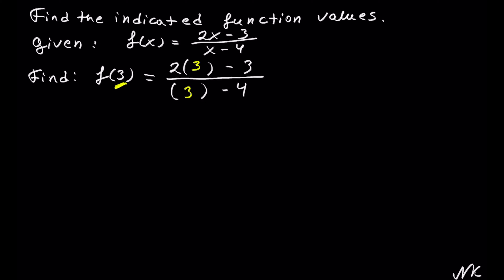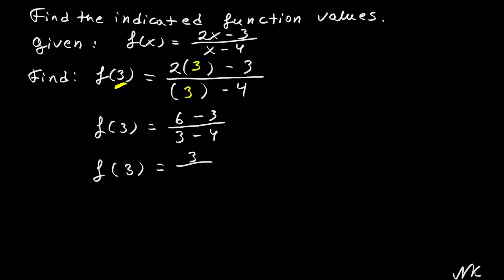Now we just follow the order of operations to simplify. We get f of 3 is equal to 2 times 3 is 6, minus 3 in the numerator, out of 3 minus 4 in the denominator. So we get f of 3 is equal to 6 minus 3, which is 3, out of 3 minus 4, which is negative 1.